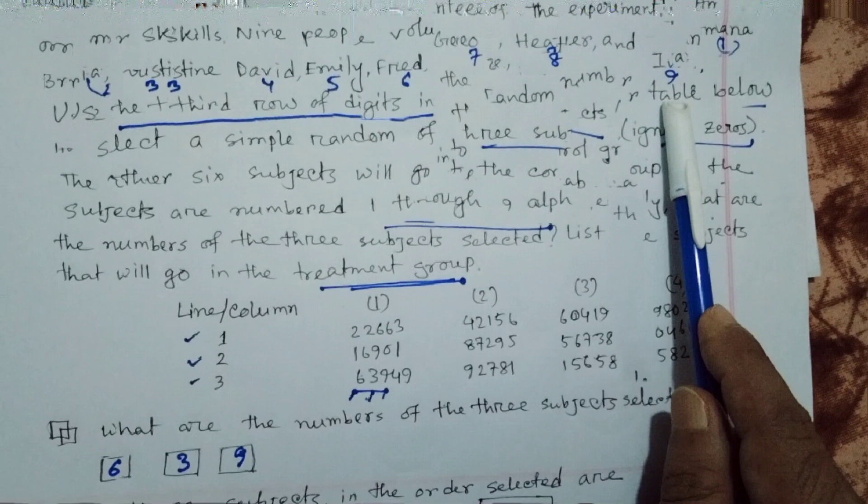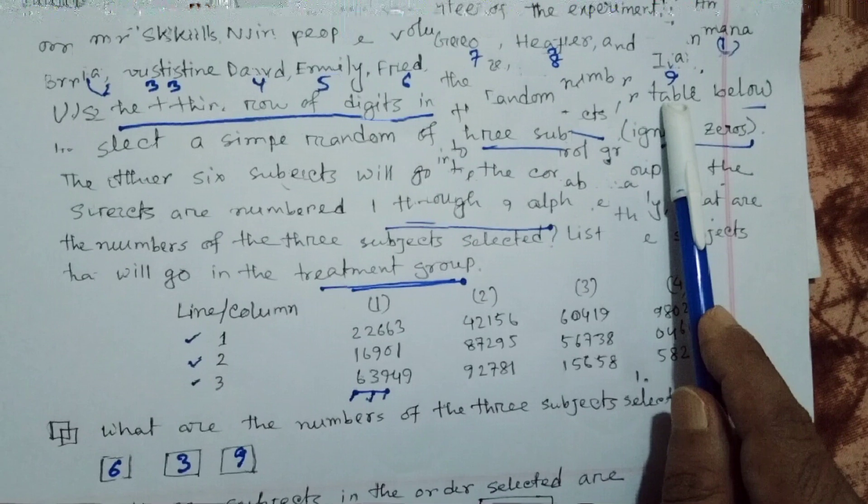What are the numbers of the three subjects selected? The three subjects here are six, three, and nine. So the numbers of the three subjects selected are six, three, and nine.